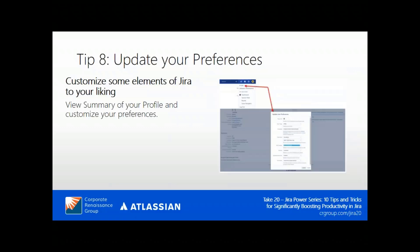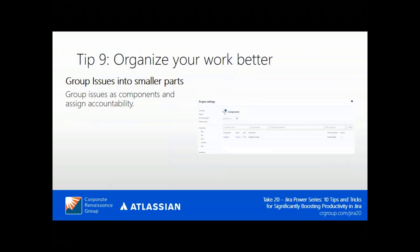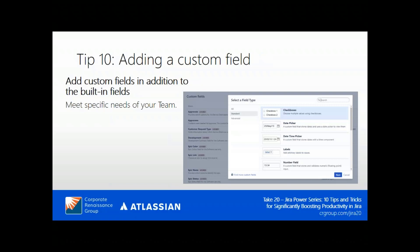Tip eight: how to update your preferences — you can customize certain elements in JIRA to your liking. Tip nine: organize your work better using components. You can group issues and assign accountability to a component lead or project lead, organizing by areas such as user interface or database. Tip ten: adding custom fields. For very specific team needs that built-in JIRA functions can't meet, JIRA gives you flexibility to add custom fields.